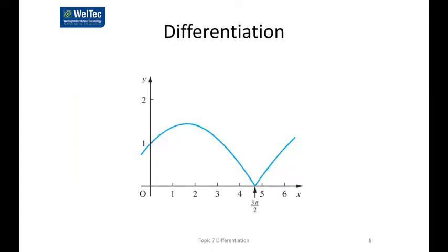We do need to be a little careful about the function we want to differentiate. In the previous example, the slopes of the curve on either side of the point and the limit were equal, but if we look at the function on this slide, the slopes on either side of the point — that's the point x equals 3π/2 — they're different. So we say that this function is not differentiable. The curve is not well behaved at 3π/2, so we can't differentiate it at 3π/2.